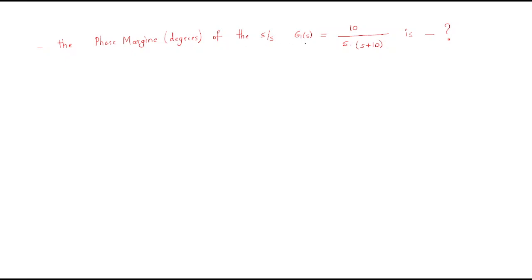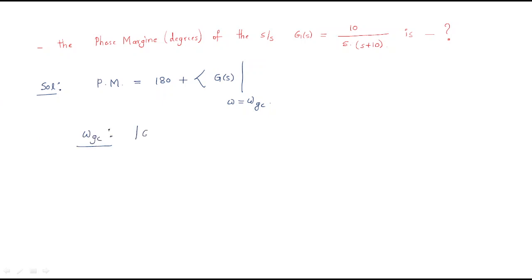The next problem asks for the phase margin in degrees of the system G(s) = 10 / [s(s+10)]. For any system, the phase margin is defined as 180° plus the phase of G(s) evaluated at the gain crossover frequency. We first find the gain crossover frequency by setting the magnitude equal to 1.